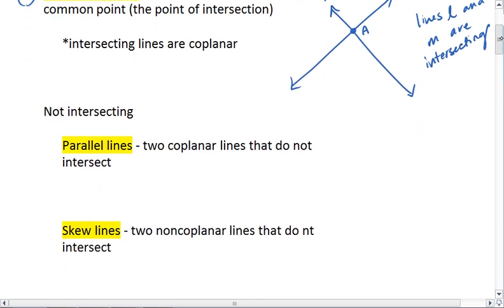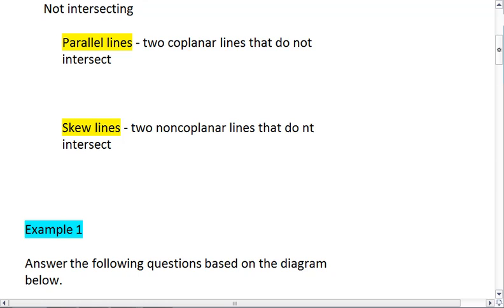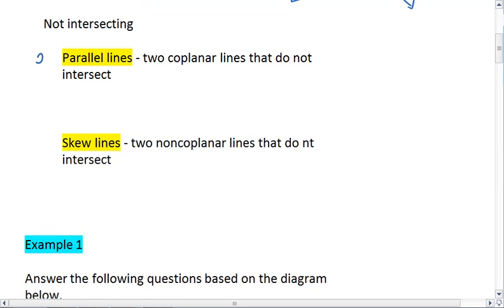If lines do not intersect, then we have two options: that we have parallel lines, or that we have skew lines.